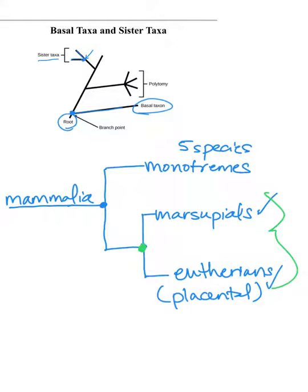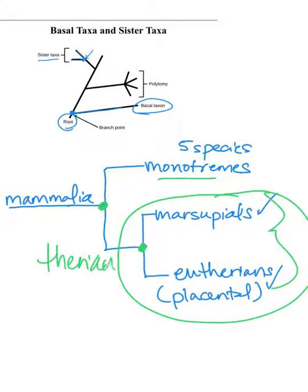However, if we move back further in time to this node, now we can describe monotremes as sister to the therians or the clade that contains both marsupials and eutherians. So now you've got monotremes and therians, this group here, that are considered sister taxa. And that is often the case. The position on the tree determines how groups can be described with respect to one another. That's just one of the reasons that learning to read phylogenetic trees can be a little bit challenging, but also pretty fun.